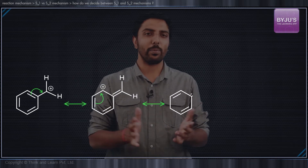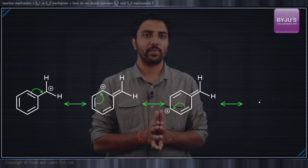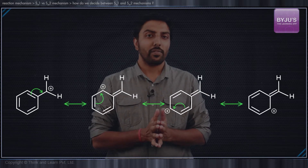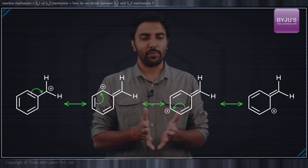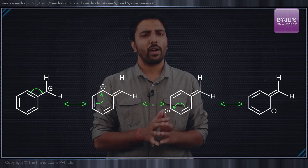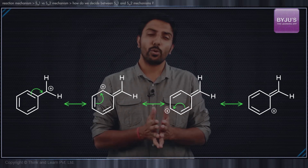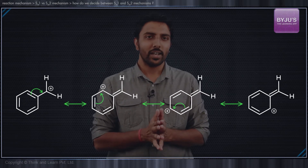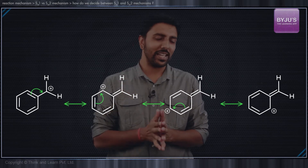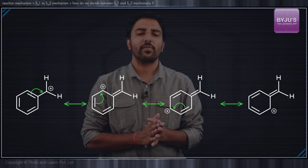Likewise, if we have a benzyl chloride undergoing an SN1 mechanism, first the stable benzyl carbocation is formed, followed by nucleophilic attack only at the benzyl carbocation.